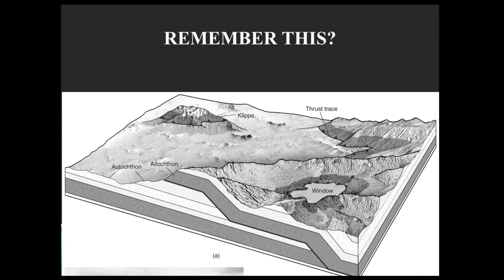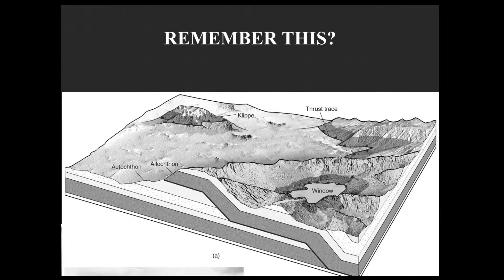The triangles are not pointing in the direction of motion — they're actually pointing opposite the direction of motion if that thrust trace is a straight line. But as you can see up here on the clipe, these triangles will go all the way around it, always pointing inward, because this is a piece of that overlying bed that's been stranded and isolated by erosion.